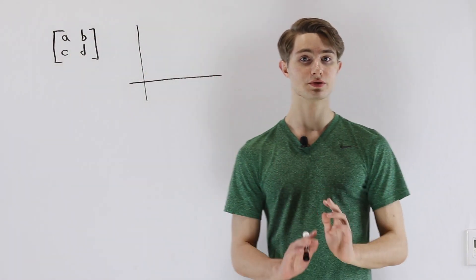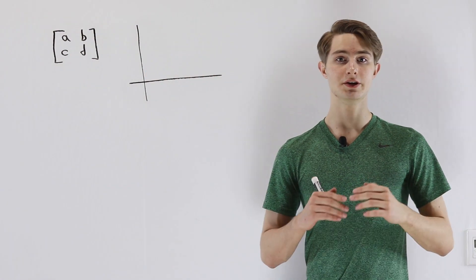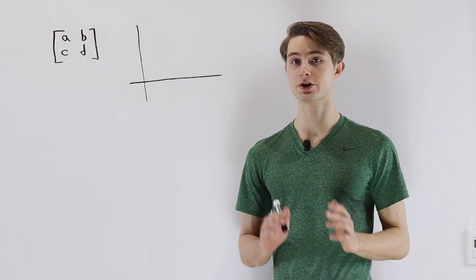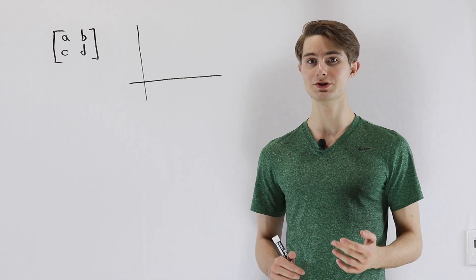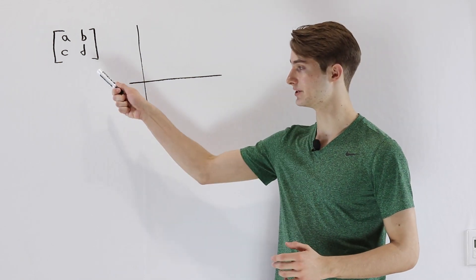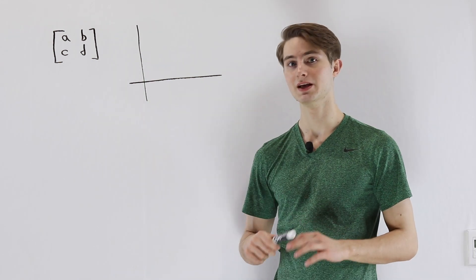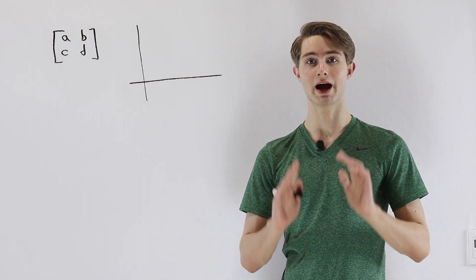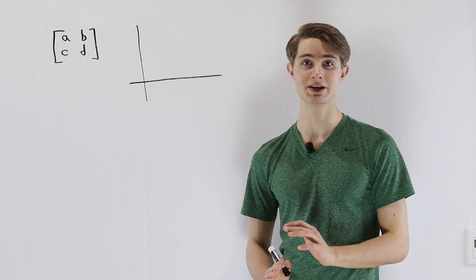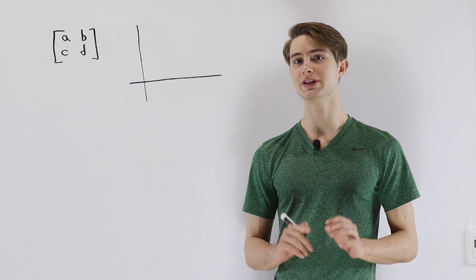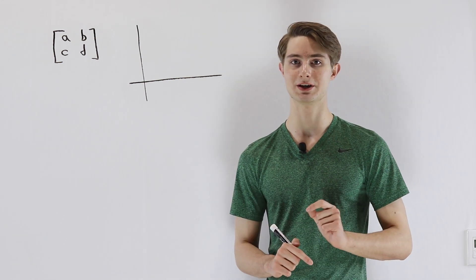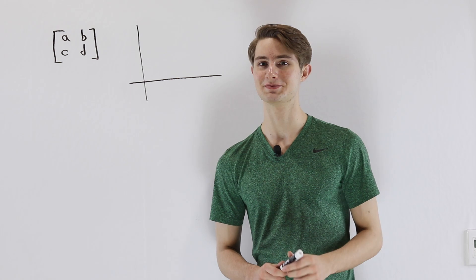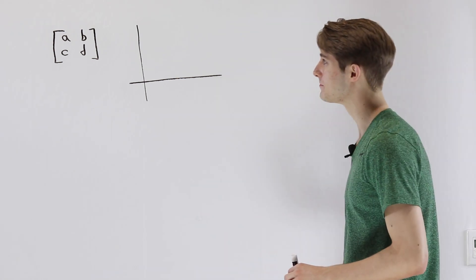In this video, we're going to prove and create an intuitive understanding for the determinant of a 2x2 matrix with real entries. After that, we're going to look at how that determinant actually relates to the multiplication of complex numbers. It's going to be awesome, so let's get started.